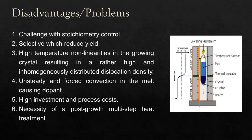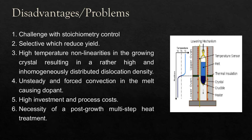There are also disadvantages of LEC: stoichiometry control issues due to uncontrolled gallium and arsenic losses through the boron oxide encapsulant; selective evaporation of the crystal surface emerging from the encapsulant, resulting in gallium droplets or trails with reduced yield; high temperature and non-linearities near the solid-liquid phase boundary resulting in high and inhomogeneous dislocation density; unsteady and forced convection in the melt causing dopant inhomogeneities and fluctuating temperature and stress in the growing crystal; high investment and process costs; and the necessity of post-growth multi-step heat treatment to improve residual stress and homogeneity of electrical properties.